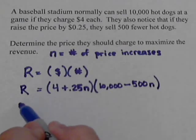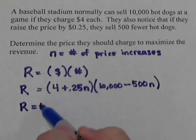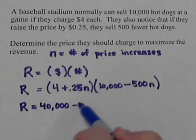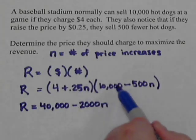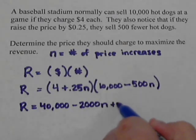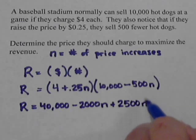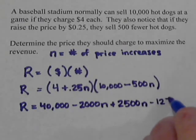Now, if we foil this out, let's see what we get. 4 times 10,000, there's 40,000. 4 times negative 500n, so that's negative 2,000n. 0.25n times 10,000, so that's 2,500n. And then 0.25n minus 500n, that's going to be negative 125n squared.